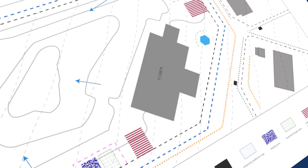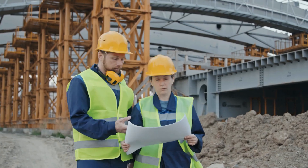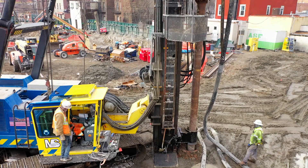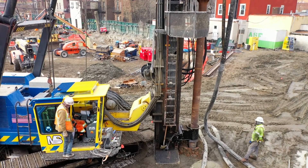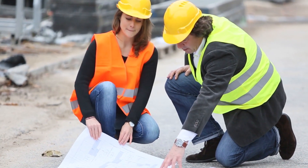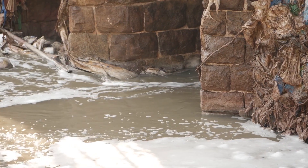Once you've selected the specific BMPs you'll implement on your site, you'll create a second active construction site map that clearly shows all the locations of each potential pollutant source and the relevant BMPs in place to control them. You'll need to establish clear roles, training, and procedures for the regular inspection, maintenance, and repair of your BMPs. This involves outlining specific responsibilities for certain individuals and general responsibilities for all employees to immediately report any accidental spills or stormwater discharges.